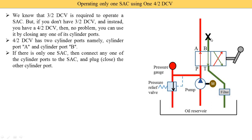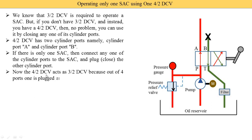You can also block port A — it depends on you. It is not necessary to always block port B. Now the 4/2 DCV acts as a 3/2 DCV. Why? Because out of 4 ports, one is plugged — plugged means we block it — and only three remain open. The B port is blocked, so we have only three open ports: A, P, and T. So this 4/2 directional control valve works as a 3/2 directional control valve.